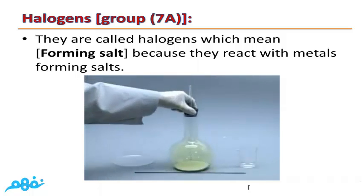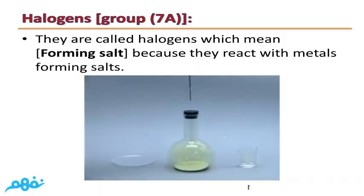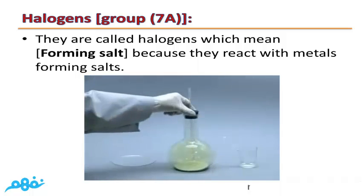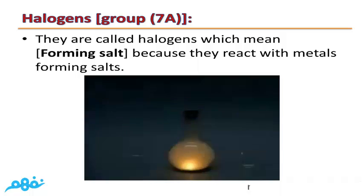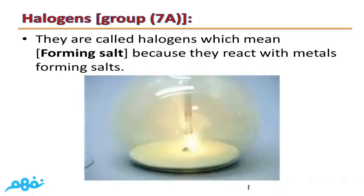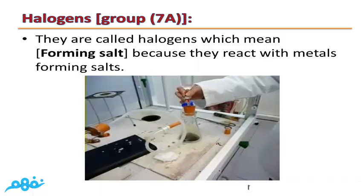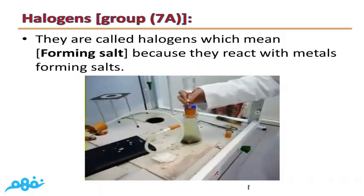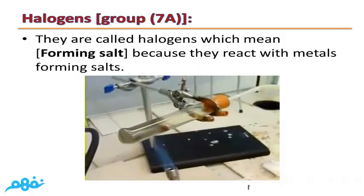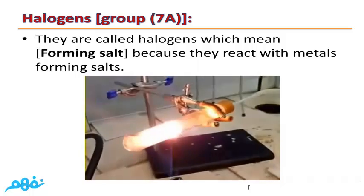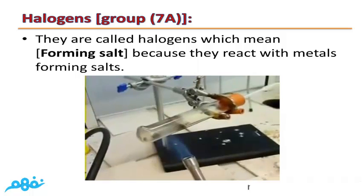They are called halogens, which means 'forming salt,' because they react with metals forming salt. For example, the reaction between Sodium and Chlorine forms Sodium Chloride — metal plus non-metal forms salt. This same reaction can be demonstrated by heating a piece of Sodium then introducing Chlorine gas; they will form Sodium Chloride, or table salt.